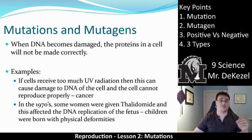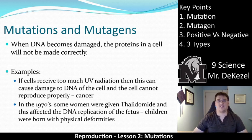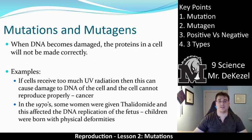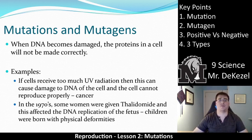For example, if a cell receives too much UV radiation — if you burn your back too often or you're tanned too much — it can cause damage to the DNA of the cells in your skin and make your skin not be able to reproduce properly. That is how you get skin cancer. Another very serious example of a mutation: in the 1970s, some women were given thalidomide, a drug for morning sickness, which affected the DNA replication of the fetus and caused mutations. You're giving this drug to pregnant women and it deforms their fetuses.